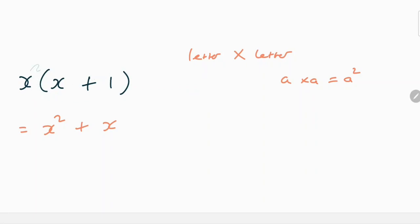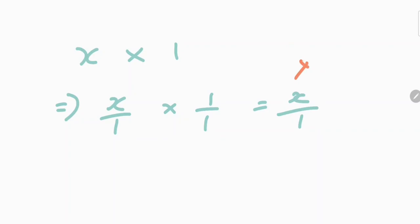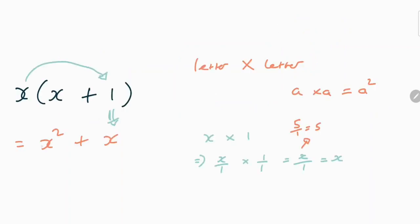You may be wondering, how is x times by 1 equaling x? Now, I'll give you a little example here. If we do x times by the 1, this can be written as x over 1 times 1 over 1. And this would give us x over 1. And if you've seen in my previous example, and in my previous video, we mentioned that 5 over 1 equals 5. And this same rule applies, which therefore means that x over 1 equals x. This, therefore, means that the answer is x squared plus x.